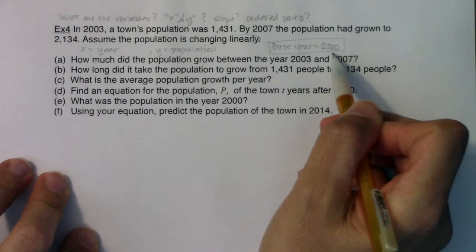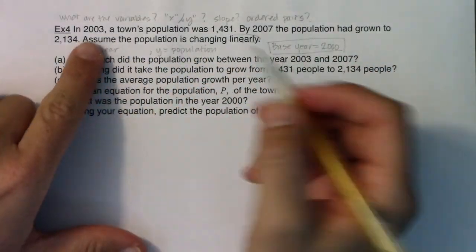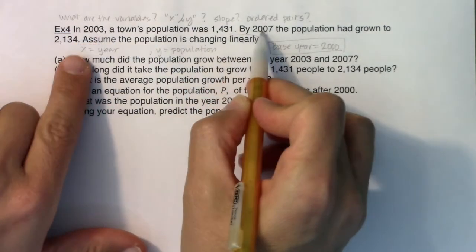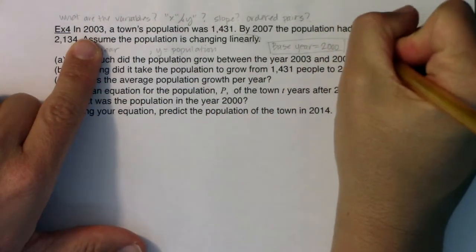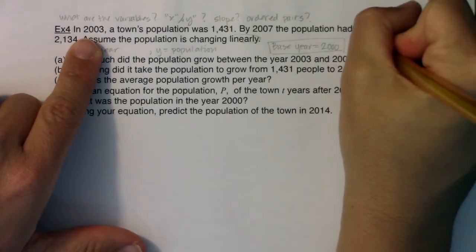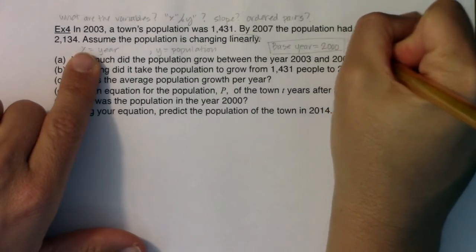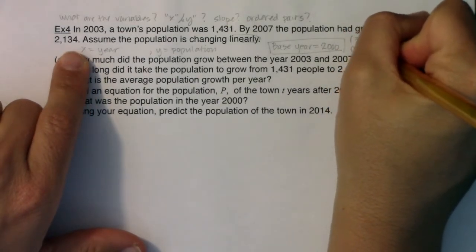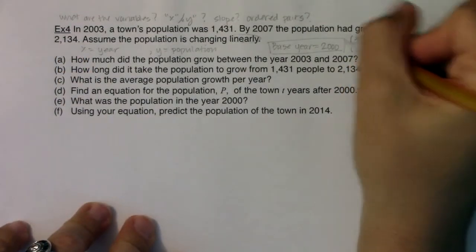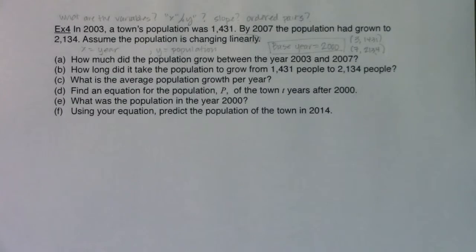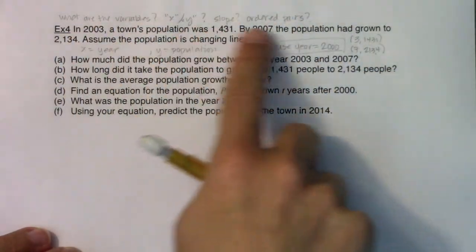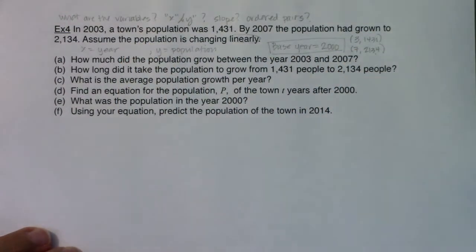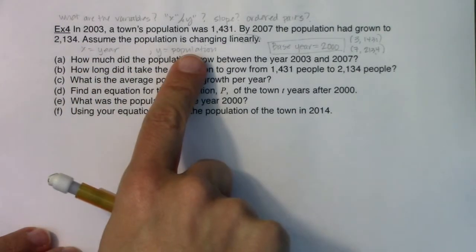With all of that, I heard two ordered pairs in here. I heard 2003, 1,431 and I heard 2007, 2,134. But keep in mind, if my base year is 2000, numerically 2003 would turn into year three and I heard 1,431. And then in year seven, I heard 2,134. So I heard my two ordered pairs. I didn't hear a slope. I was given two ordered pairs and no slope. But I want you to see that before I've even read any of this stuff, I can unpack these three sentences and get my two ordered pairs, set my base year, figure out my X and Y.